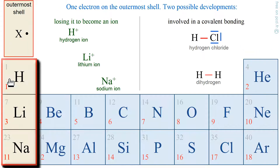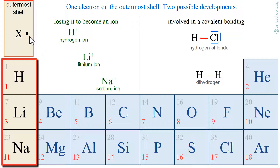In the first column, these 3 elements have the same Lewis representation. They have 1 valence electron. Hydrogen, lithium, sodium — what can become of them to look like the nearest inert gas?